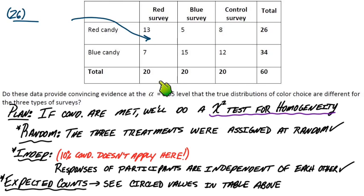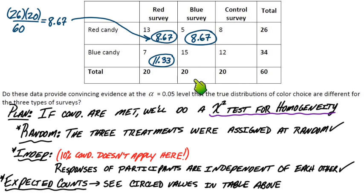times the column total, which would be 20, divided by the table total, the overall total here, which would be 60, which gives us our expected count for this cell of 8.67. So I'm going to put 8.67 in there, circle it, and then I'm going to move on. The one below that, use the same method, 11.33 for this guy, for this cell. And then you should start to notice a pattern. So the next one up top here, 8.67, because the row total and the column total should be the same as they were for that cell. And then 11.33, 8.67, 11.33.